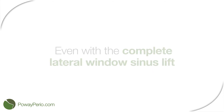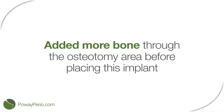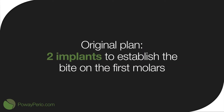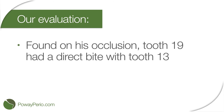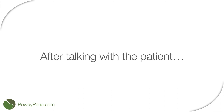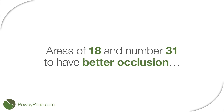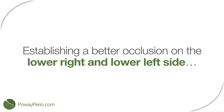There was not much bone even with the complete lateral window sinus lift, so at the time of implant placement I added more bone through the osteotomy area before placing the implant. On the lower jaw we did 4 implants. The original plan was doing 2 implants only, to establish the bite on the first molars. Based on our evaluation, tooth number 19 has a direct bite with tooth number 13, and the same situation on the right side — tooth number 30 has a direct bite with number 4. So we talked to the patient and decided to add one more molar on the lower jaw on each side.